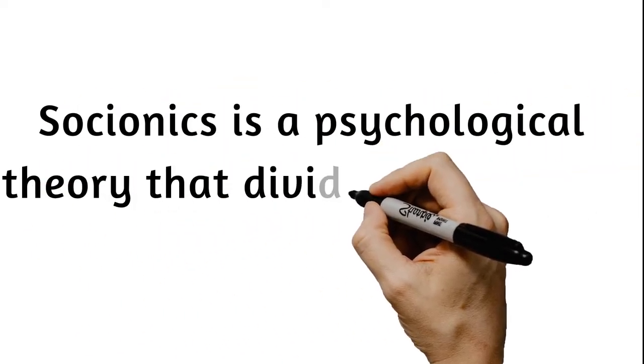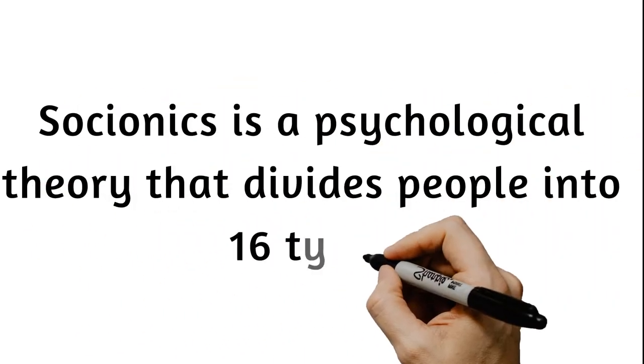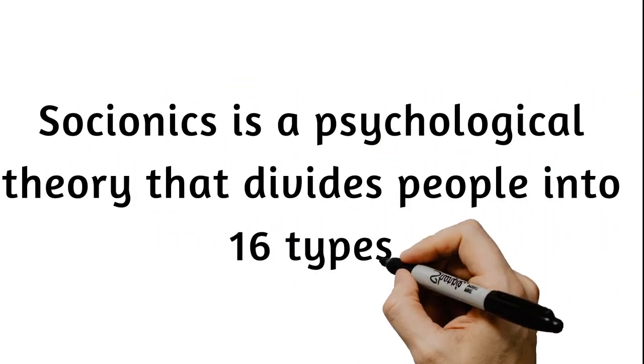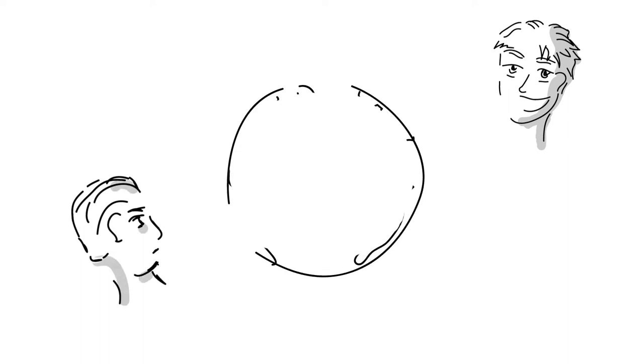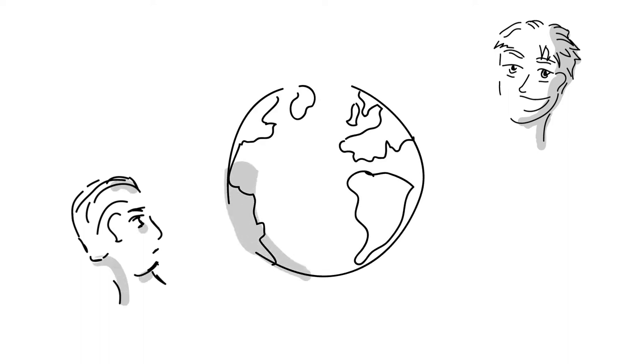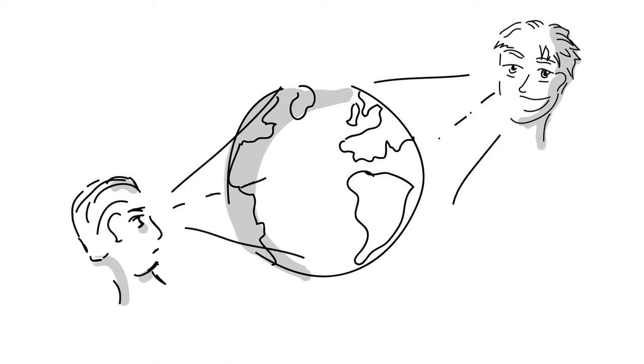Socionics is a psychological theory that suggests that people can be divided into 16 types. There are no good or bad types in Socionics. Rather, Socionics describes each type's strengths and weaknesses and values. It describes how we all see the world differently because each of us has a different and partial picture of reality.